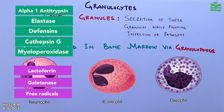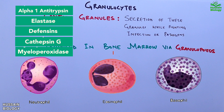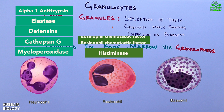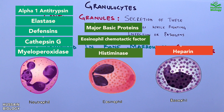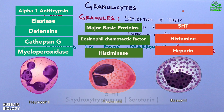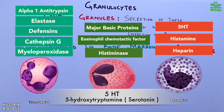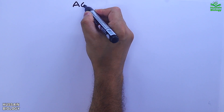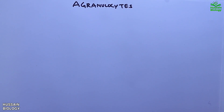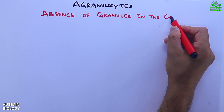Eosinophil granules contain histaminase, ECF, and MBP. Eosinophils are less motile than neutrophils and less phagocytic in nature. Basophil granules contain heparin, histamine, and 5-HT. Basophils show mild phagocytosis.